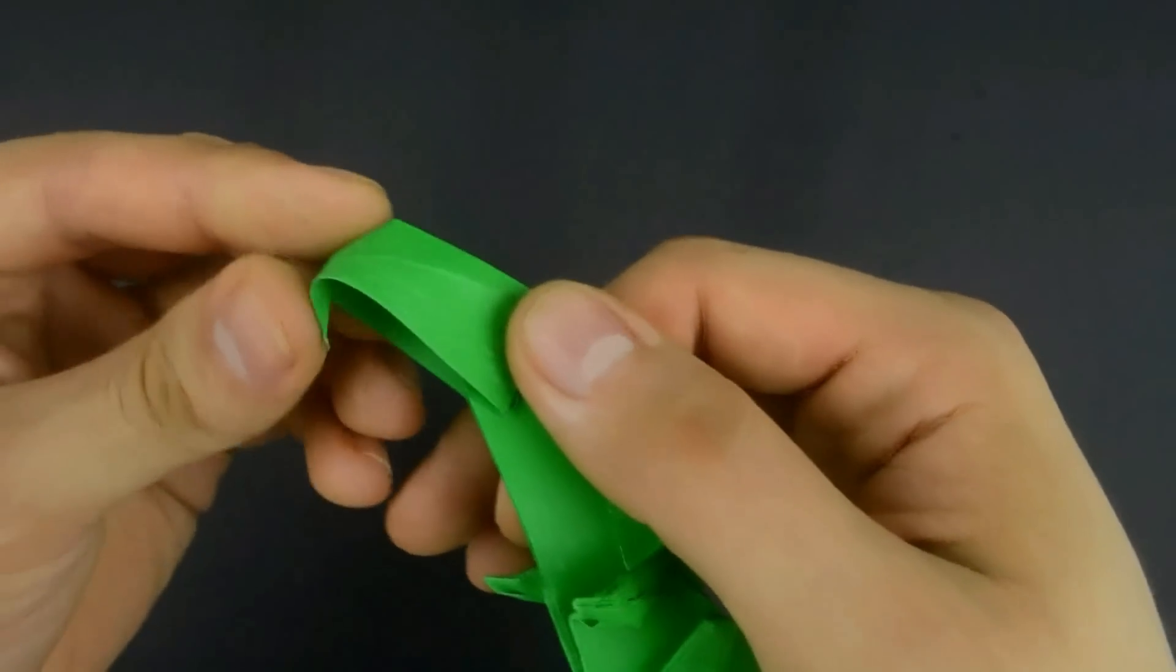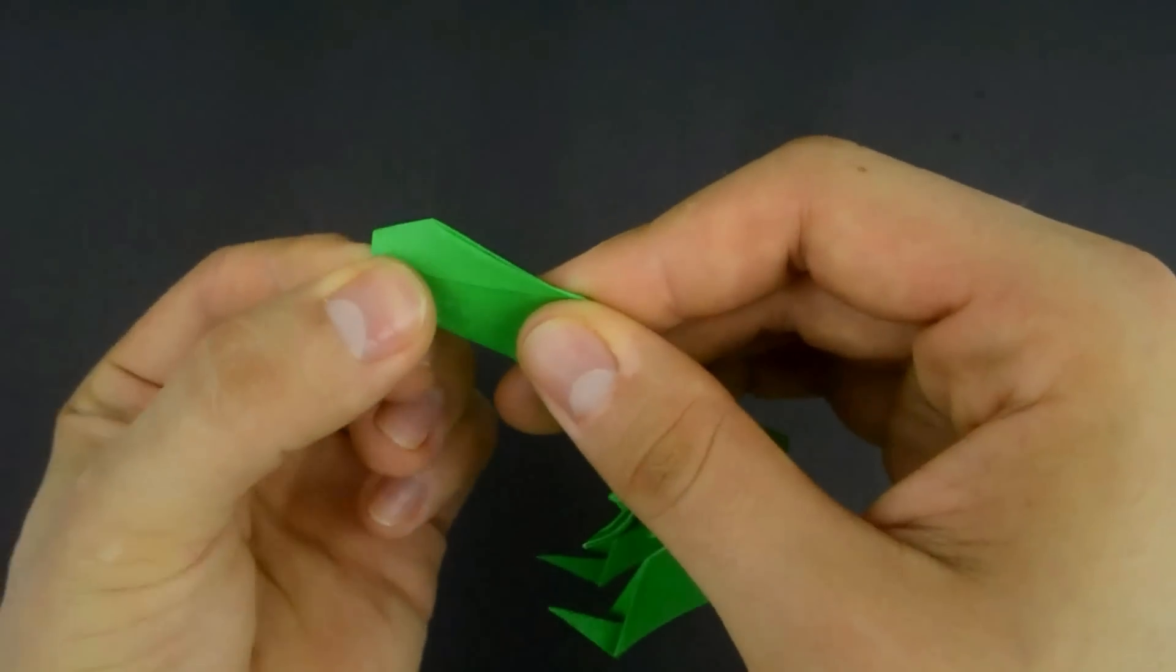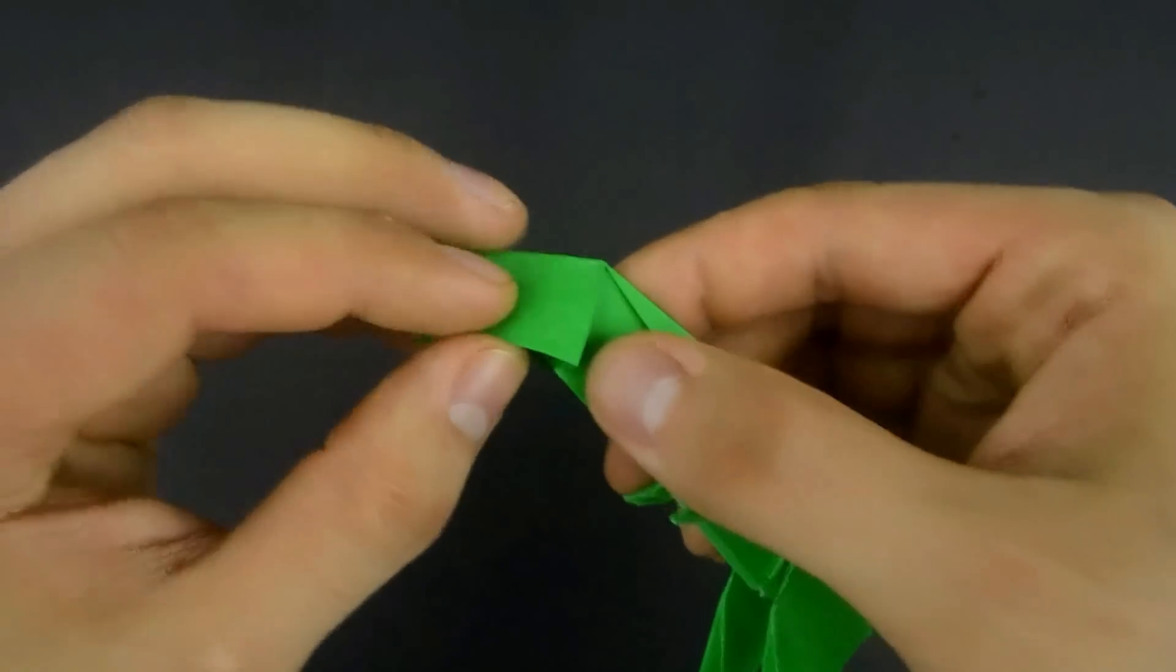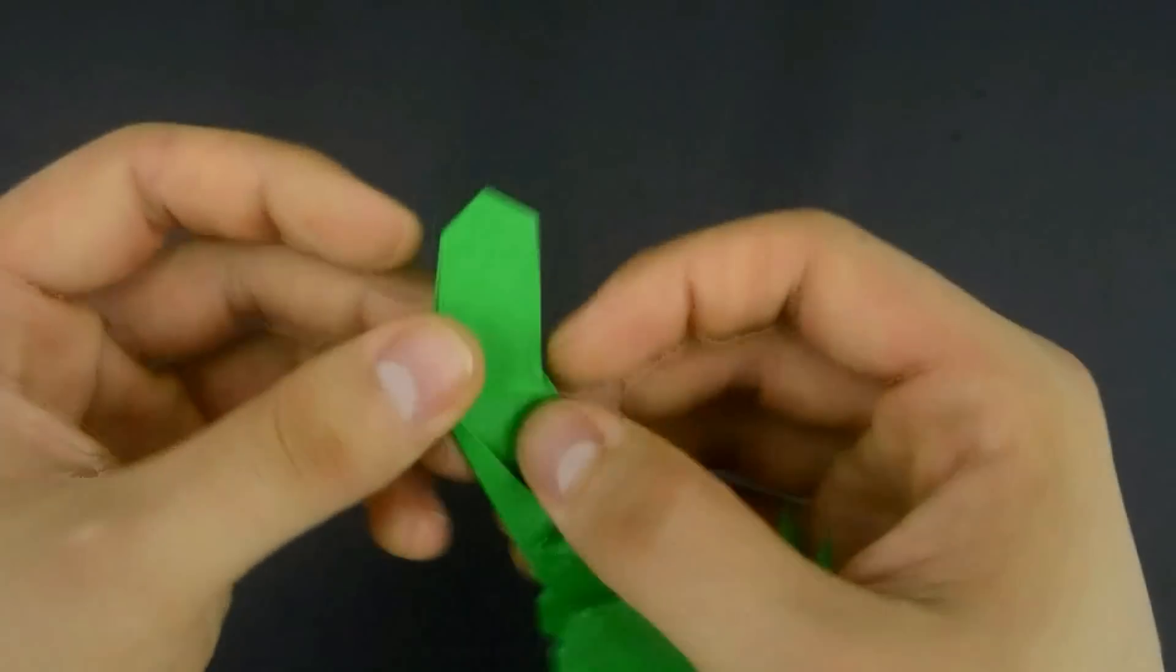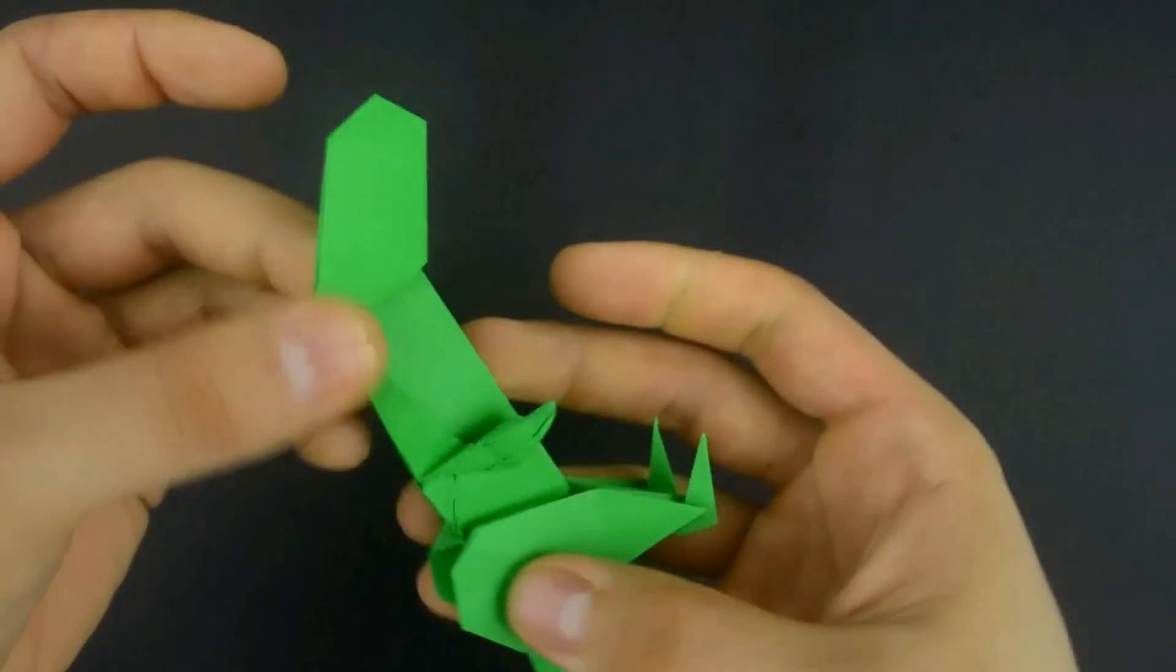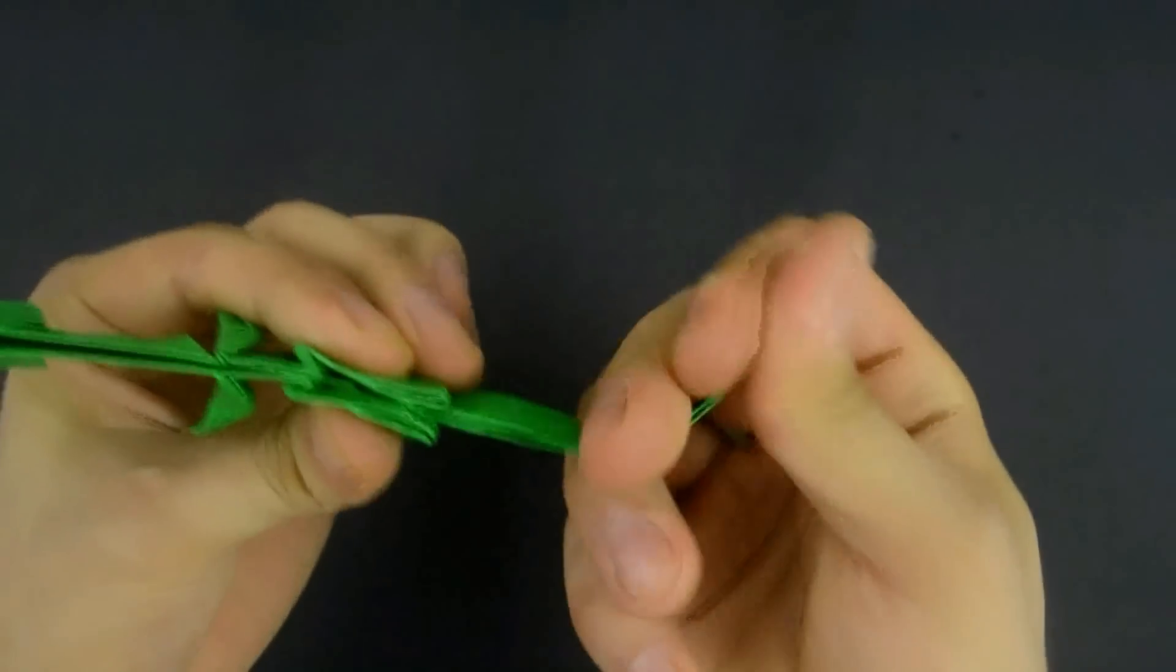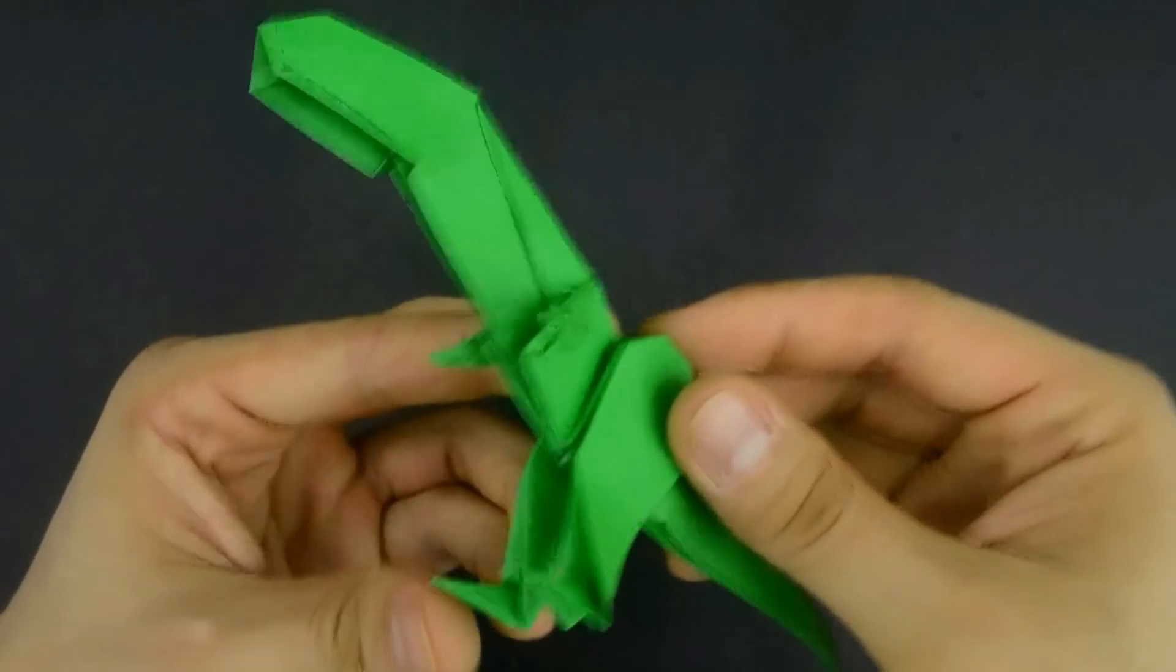Reverse this point and also these little corners on the side. As the last step, make a curve in the tail. And our paper dinosaur is ready.